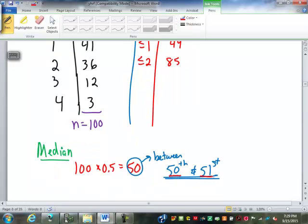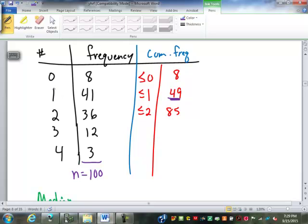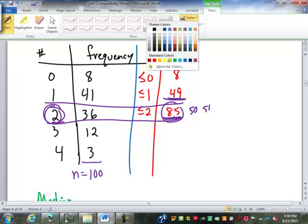The median, we said, was between the 50th and 51st. If there's 49 of them that are less than or equal to 1, 85 that are less than or equal to 2, the 50th and 51st numbers have to be in this range. The 49th one is 1 car. The 85th one is 2 cars. All of them between 49 and 85 are 2 cars. Which means both the 50th and the 51st one have to be in that class of 2 cars. Does that make sense?